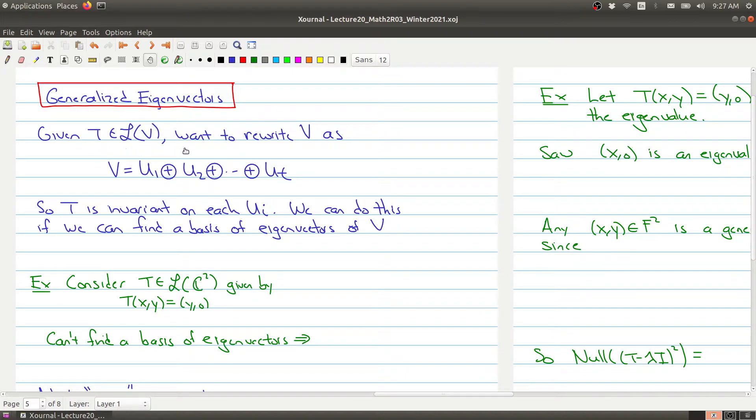Given any linear operator, one of the things we want to do is rewrite V as a direct sum of subspaces so that T is invariant on each of these subspaces. When we look at T restricted to any of these UIs, you get sent back to an element back in UI.